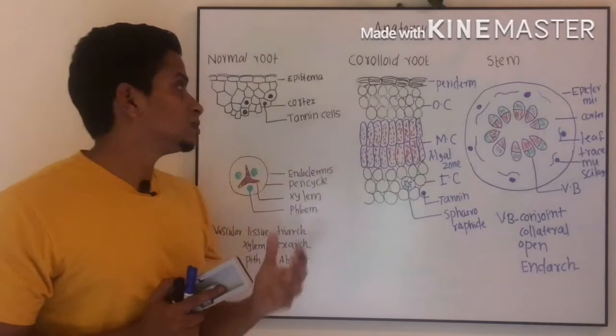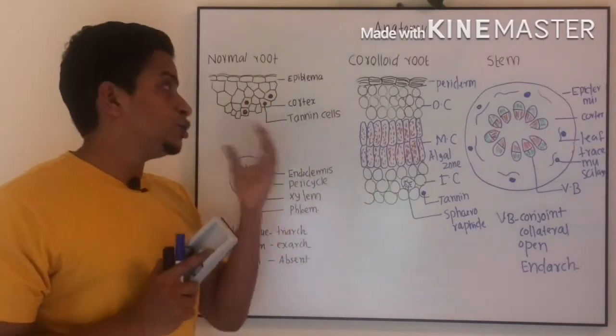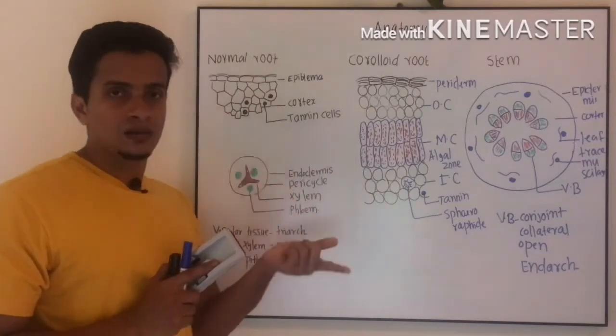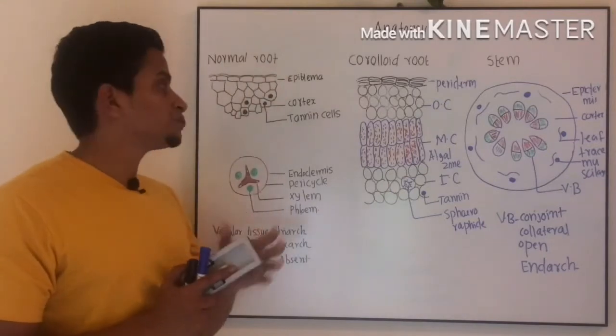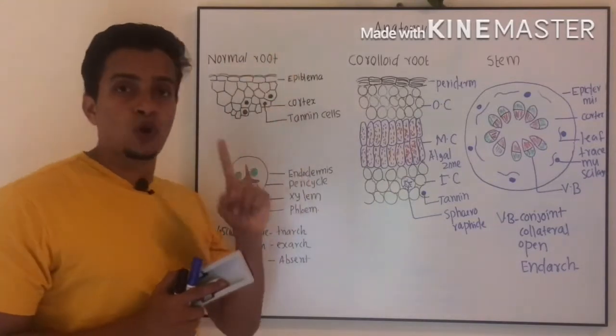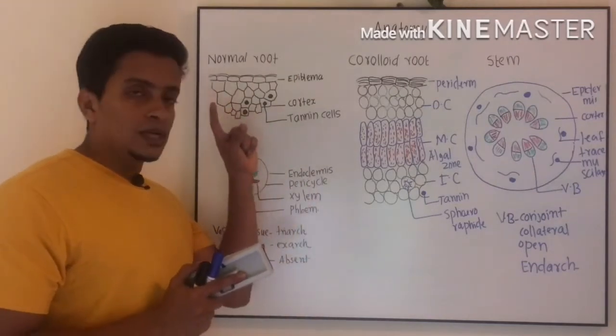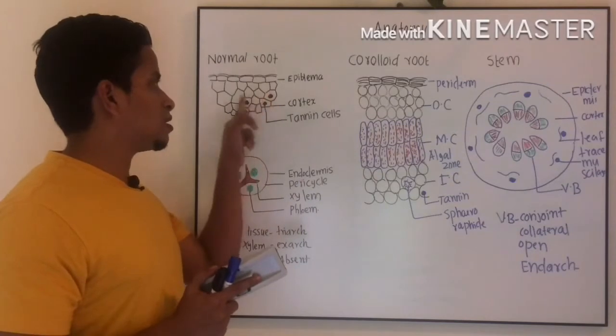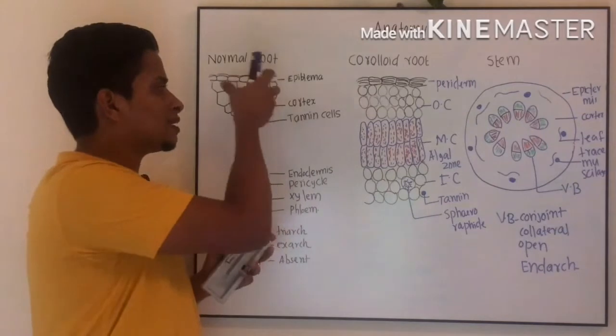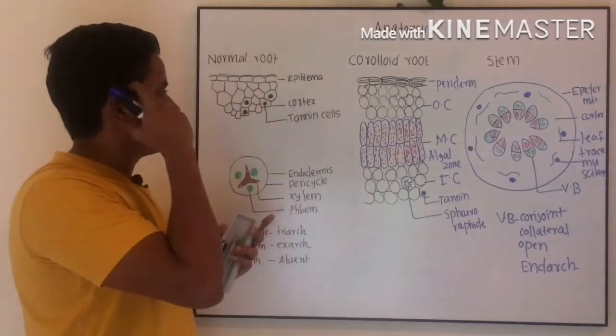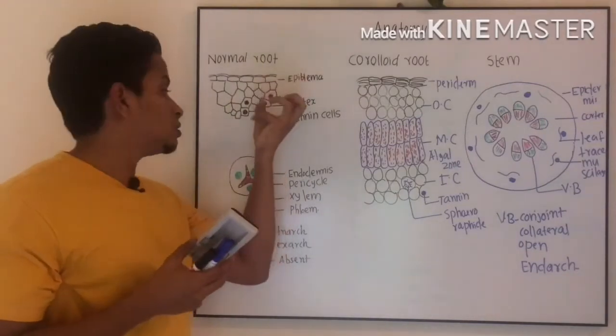Epidermis here is known as epiblema. In the case of root, we will use epiblema instead of epidermis, which is protected by a cuticle. This is followed by a broad parenchymatous cortex which is composed of tannin cells. These black colored ones represent tannin cells. Internally, the cortex is delimited by the innermost layer, which is the endodermis.